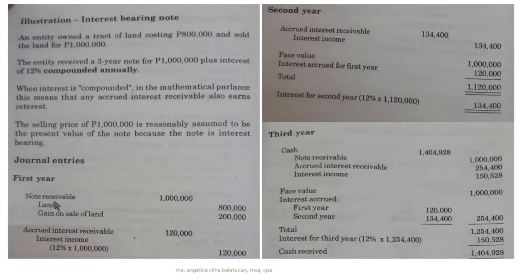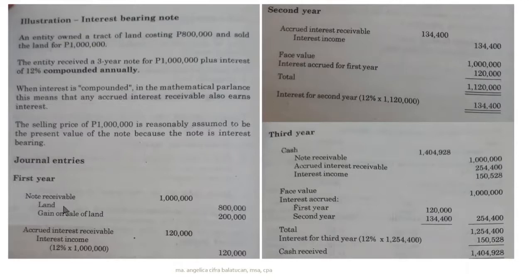The journal entry would be: debit Notes Receivable 1,000,000 — this is our consideration for the land — and credit Land for 800,000, because we have disposed of the land. The difference of 200,000 would be recorded as the gain on sale of land.